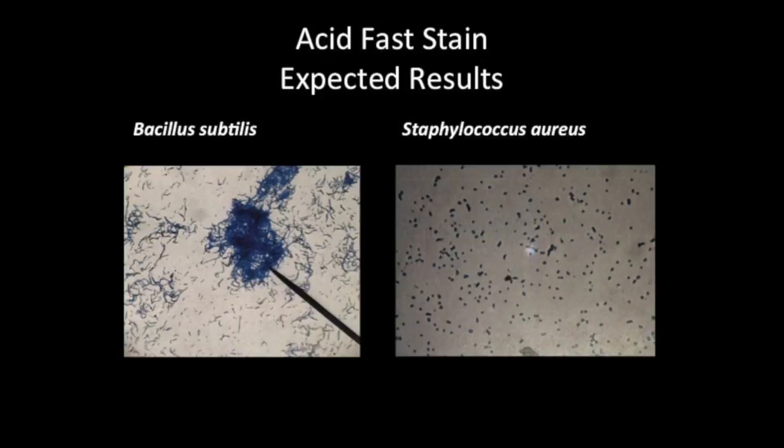Note that you can still observe other morphological details about these organisms. You can still make out the large bacillus shape on the left for Bacillus subtilis, and on the right it is apparent that these are coccus cells for Staphylococcus aureus. The Staphylococcus sample was not incubated long enough to be able to observe clusters of cells.